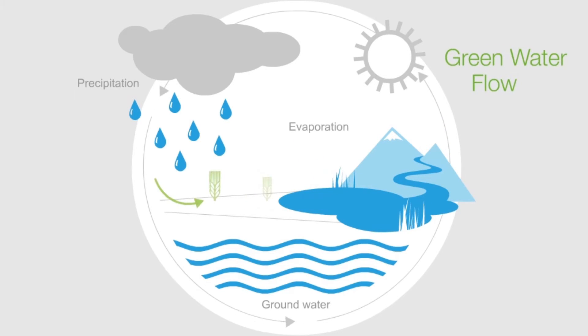The green water flow describes the absorption and evaporation of fresh water in the upper soil layers and plants.